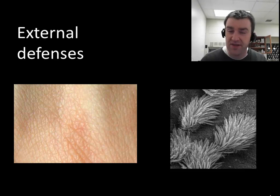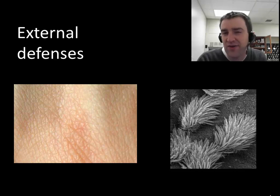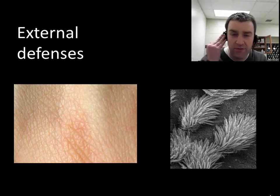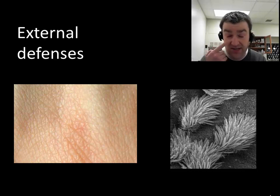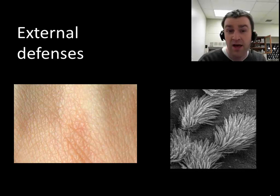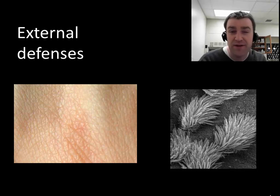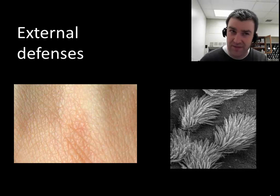There are also external defenses in other places external to your bloodstream. We have to interact with our environment — we can't simply have skin cover our entire body. We let light in through our eyes, sound through our ears, we breathe through our mouth and nose, and we eat food down through a digestive tube. Fundamentally, we're interacting with our environment in ways that create avenues for pathogens to get in.